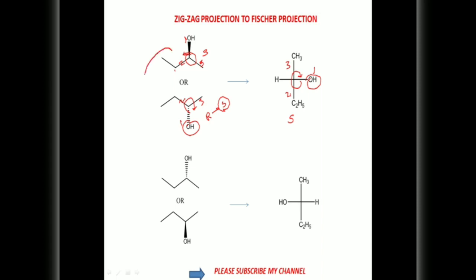You can see in these two examples: OH below the plane and directed in upward direction must be written on the left side. Also, this group in downward direction and above the plane — in this case also, that OH must be written on the left side. So OH downward direction below the plane must be written on the right side, and OH downward direction above the plane must be written on the left side.